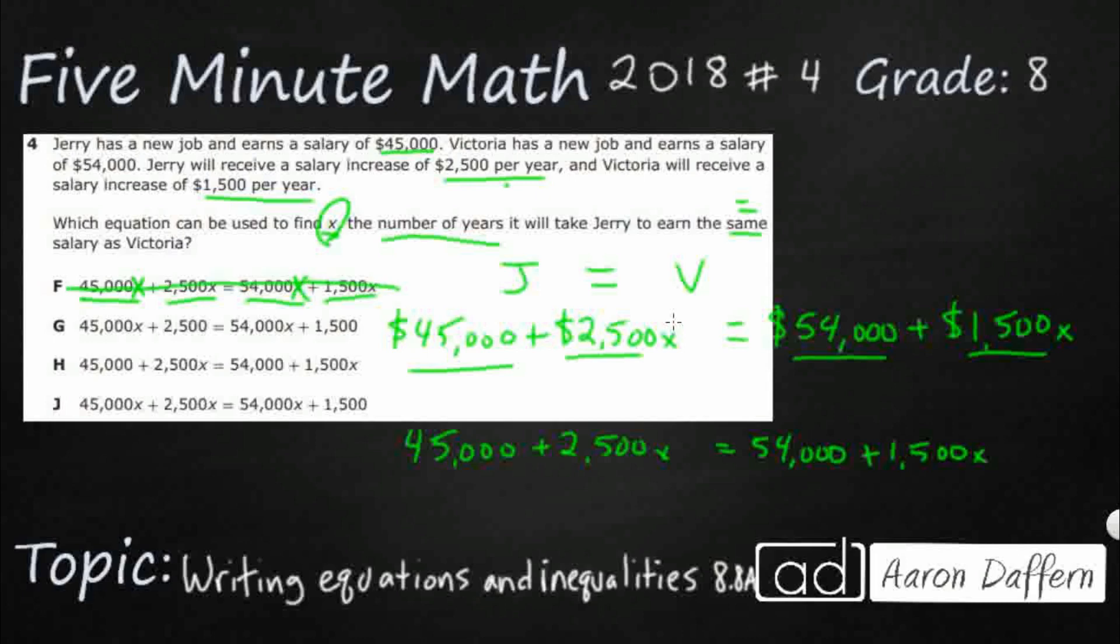Let's check G. This is also, wow, $45,000 a year raise, $54,000 a year raise. That's huge. This is saying that your starting salaries are $2,500 and $1,500, and you're being raised $45,000 and $54,000. That's opposite, actually.